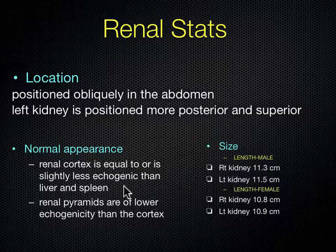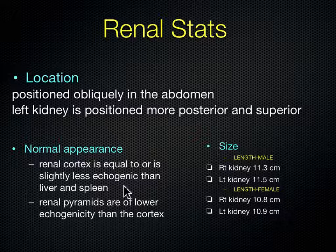Kidney sizes differ slightly between males and females — they're about a half centimeter larger in males. The right kidney is actually smaller than the left kidney. In males, the right kidney is about 11.3 centimeters whereas the left is 11.5 centimeters. The same pattern holds for females, with the left side being slightly larger.